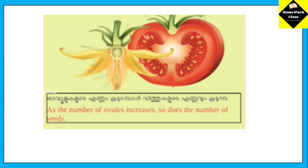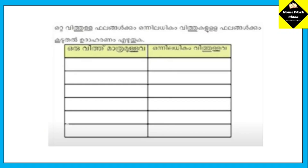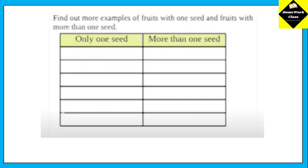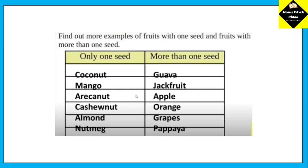The number of ovules determines the number of seeds. Fruits with one seed include coconut, mango, areca nut, cashew nut, almond, and nutmeg. Fruits with more than one seed include guava, jackfruit, apple, orange, grapes, and papaya.